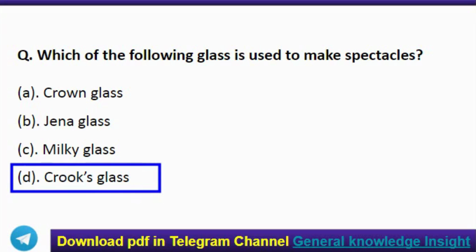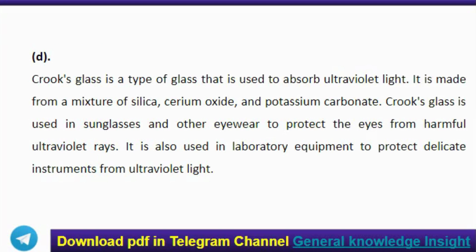The next question: which of the following glass is used to make spectacles? The correct answer is option D, Crookes glass. Crookes glass is a type of glass used to absorb ultraviolet light. It is made from a mixture of silica, cerium oxide, and potassium carbonate. Crookes glass is used in sunglasses and other eyewear to protect the eyes from harmful ultraviolet rays, and also in laboratory equipment to protect delicate instruments from ultraviolet light.